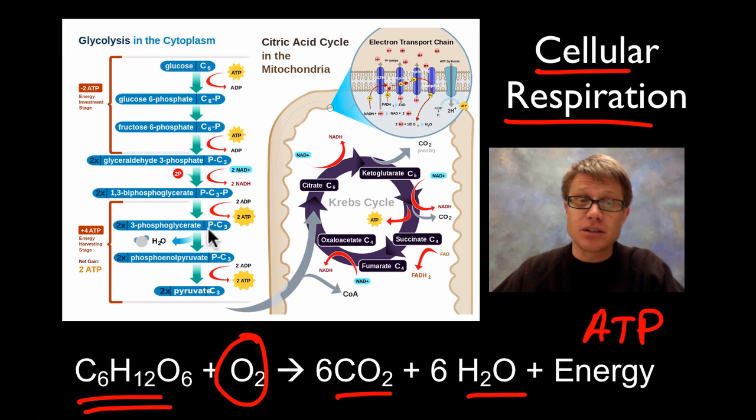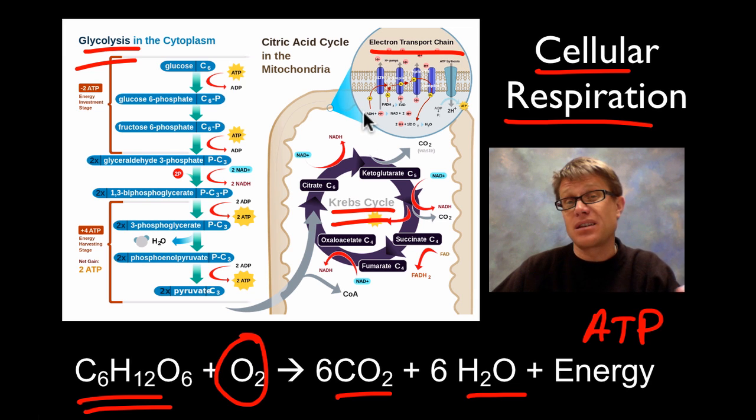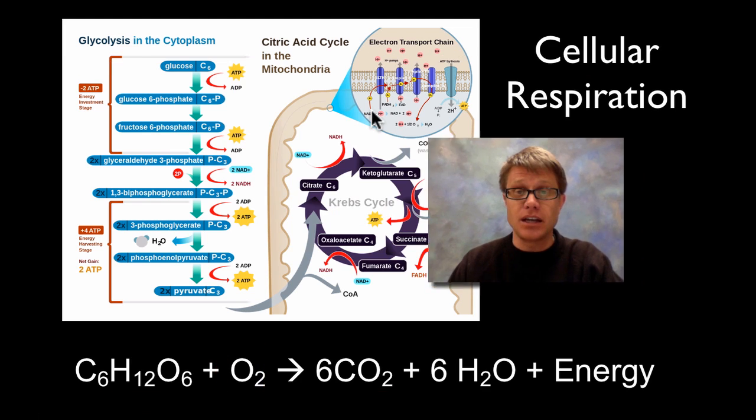Remember there are three different steps. We have glycolysis which is going to occur outside of the mitochondria. We have the Krebs cycle which occurs inside the mitochondria. We're going to give off carbon dioxide and we're going to produce NADH and FADH2. And then finally we have the electron transport chain where we're going to use the energy in NADH and FADH2 to make ATP or to generate ATP.